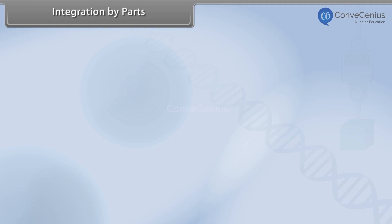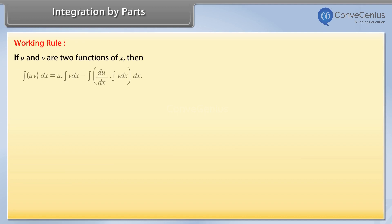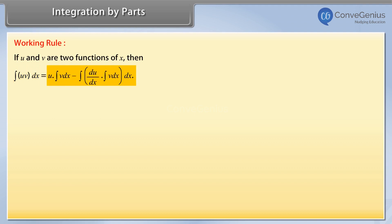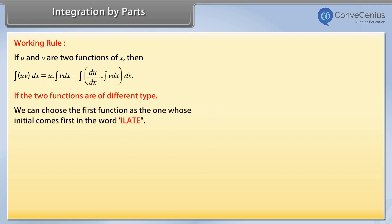Integration by parts working rule: if u and v are two functions of x, then the integral of the product of two functions is equal to the first function into the integral of the second, minus the integral of the differential of the first into the integral of the second function. If the two functions are of different type, we can choose the first function as the one whose initials come first in the word ILATE.